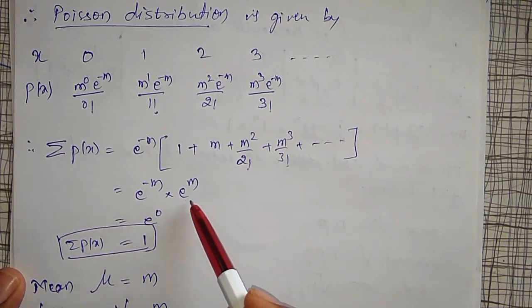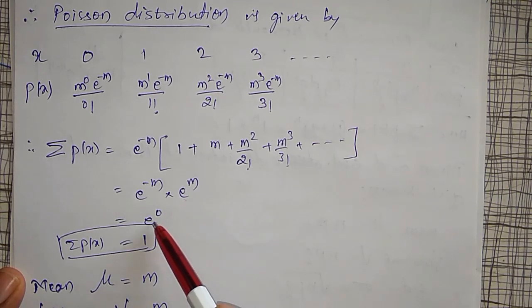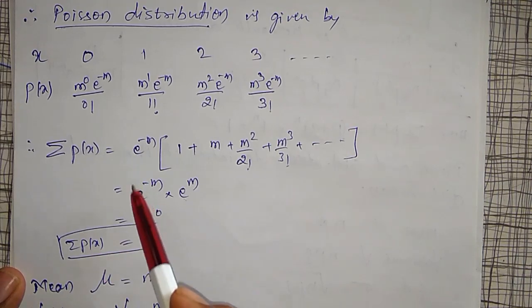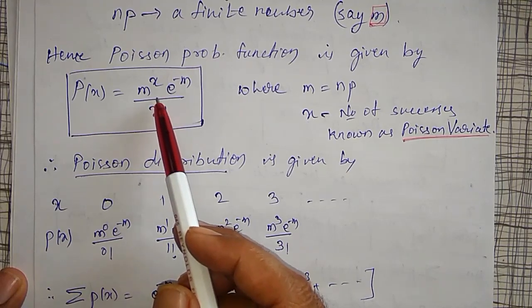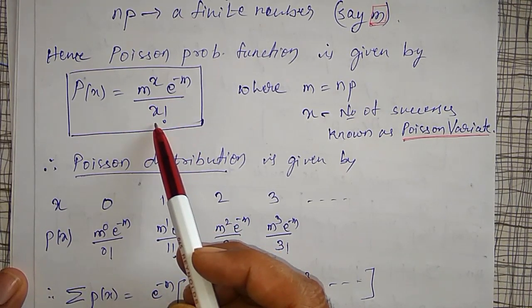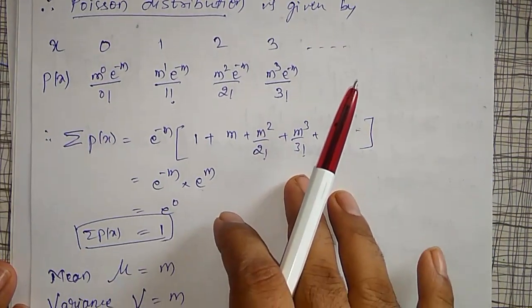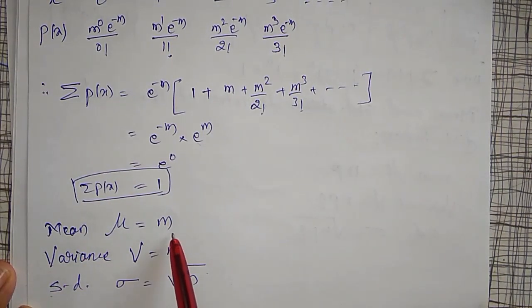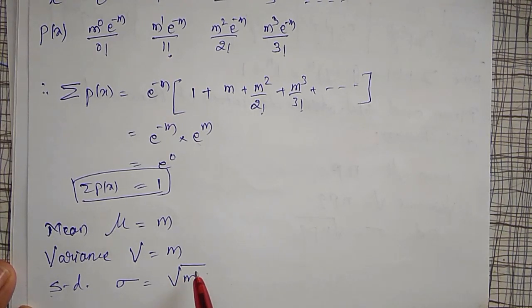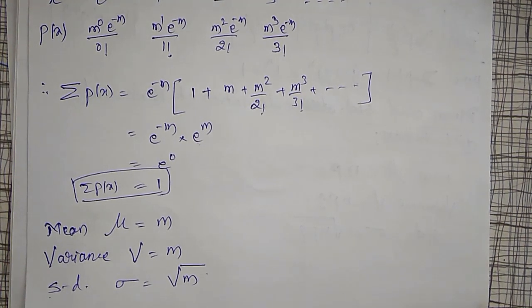Therefore e^(−m) · e^(+m) = e^0 = 1, so the sum of all probabilities equals 1. Thus P(x) = m^x · e^(−m) / x! is a valid probability function for the Poisson distribution. For the Poisson distribution, mean = m, variance = m, and standard deviation = √m.